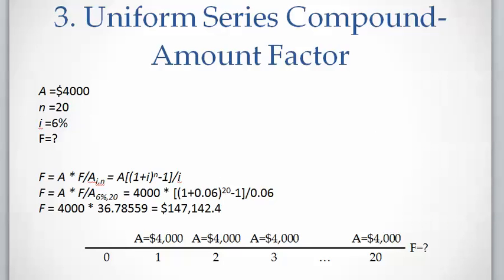So A equals $4,000, N number of years is 20, I interest rate 6%, and F needs to be calculated.